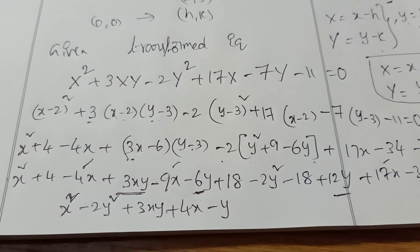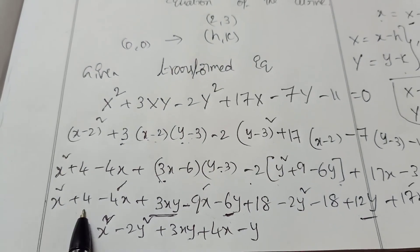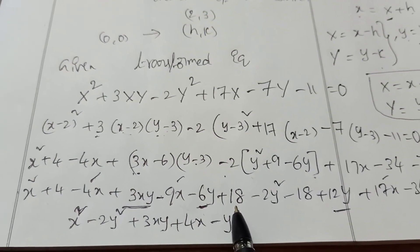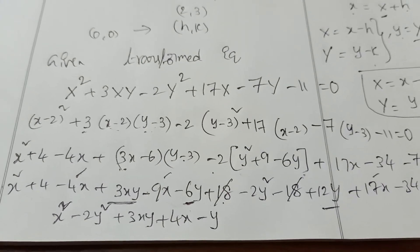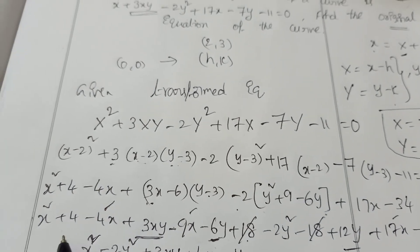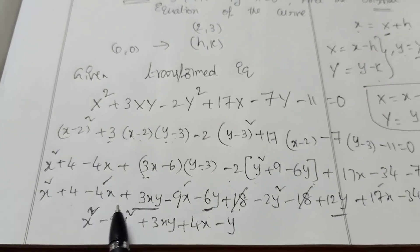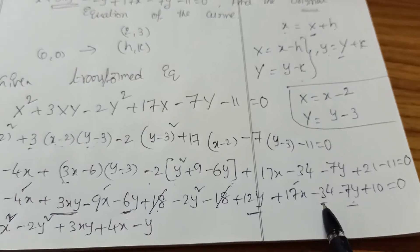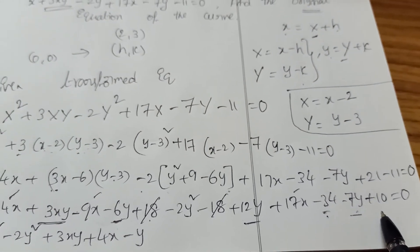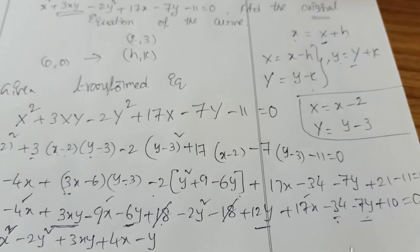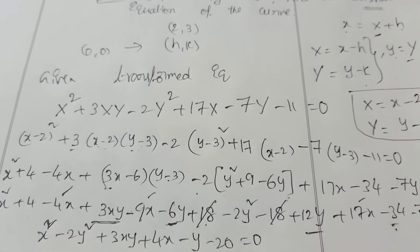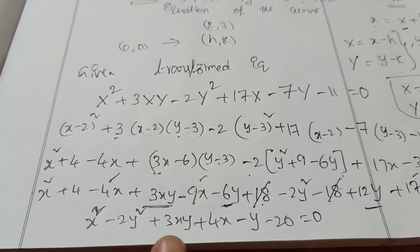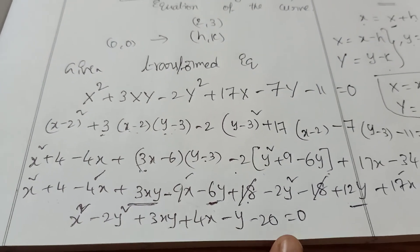The final answer is: x square minus 2y square plus 3xy plus 4x minus y minus 20 equal to 0. This is the original equation of the curve.